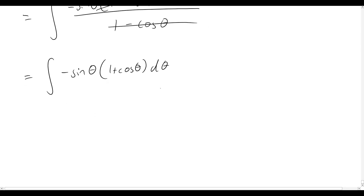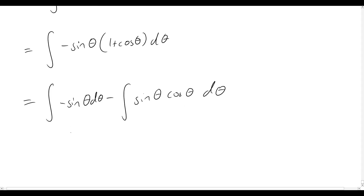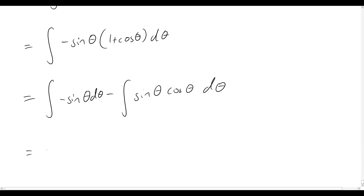We can expand the brackets and integrate. That gives us the integral of minus sine theta minus the integral of sine theta cos theta, d theta. The integral of minus sine theta is cos theta. The integral of sine theta cos theta gives minus one half cos squared theta, and since we've already got that minus out front, it becomes plus one half cos squared theta.